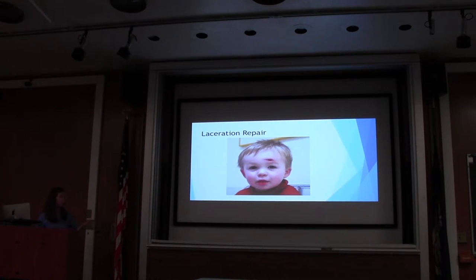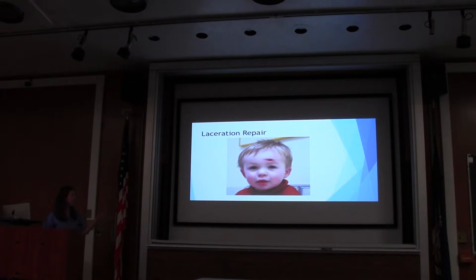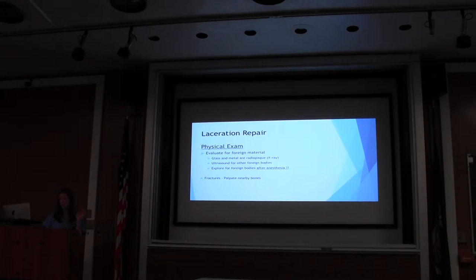Your classic case is a one-and-a-half to two-year-old, active and playful, running at the park, falls in the sandbox. Mom didn't really see exactly where he landed, but he fell and got up with no loss of consciousness. This wound may look a little gaping. The other things to think about with this kind of kid is foreign body — who's at the park and maybe it's a little dirty. Always keep the foreign body aspect in the back of your head. If you were to do an X-ray, glass and metal are radio-opaque. You could ultrasound for other foreign bodies, especially in extremities like the foot.